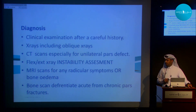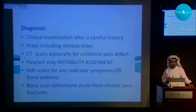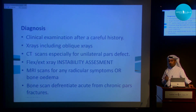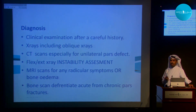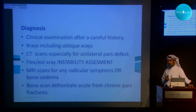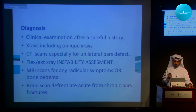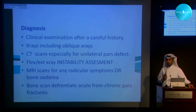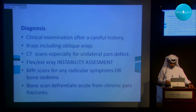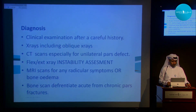Diagnosis is through careful clinical examination and history. Many of these patients go undiagnosed — they develop some back pain, go to primary healthcare, get prescribed medication, and heal. A high index of suspicion should be maintained. You need oblique x-rays, CT scans — especially important for unilateral pars defect — flexion-extension x-rays to assess instability, MRI scan, and bone scan.